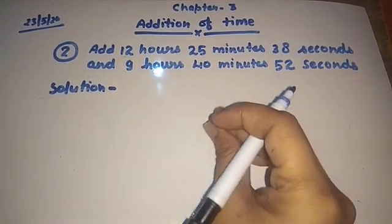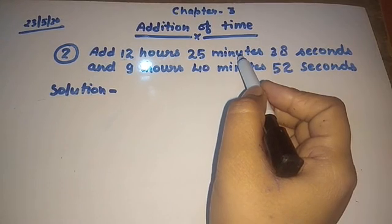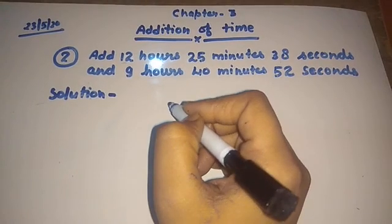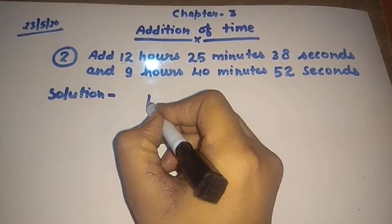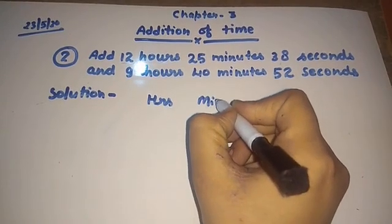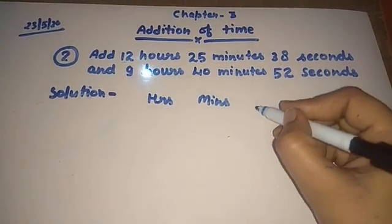Here, students, three units are given: hours, minutes, and seconds. So we will write three columns. First hours, second minutes, and third seconds.